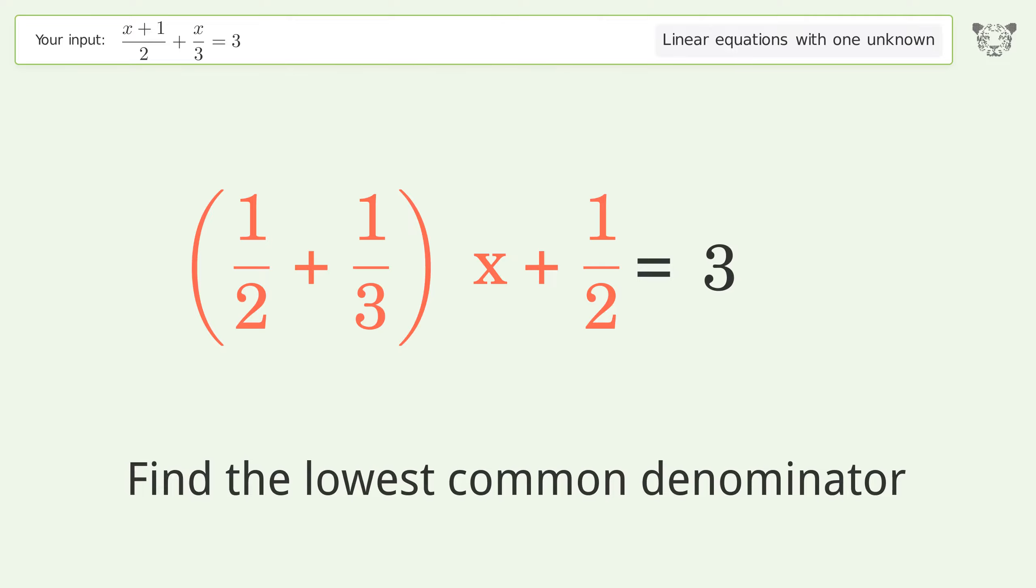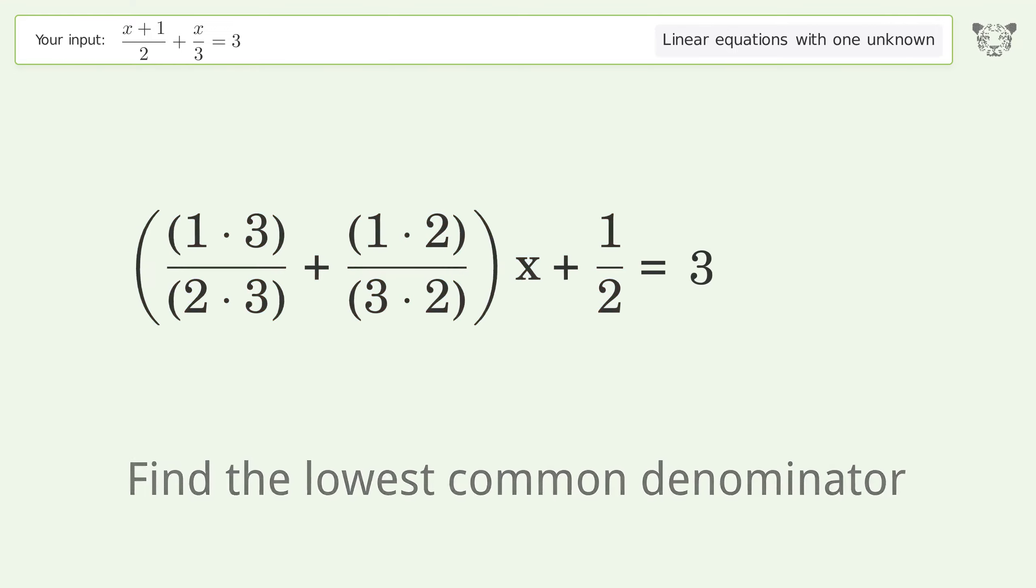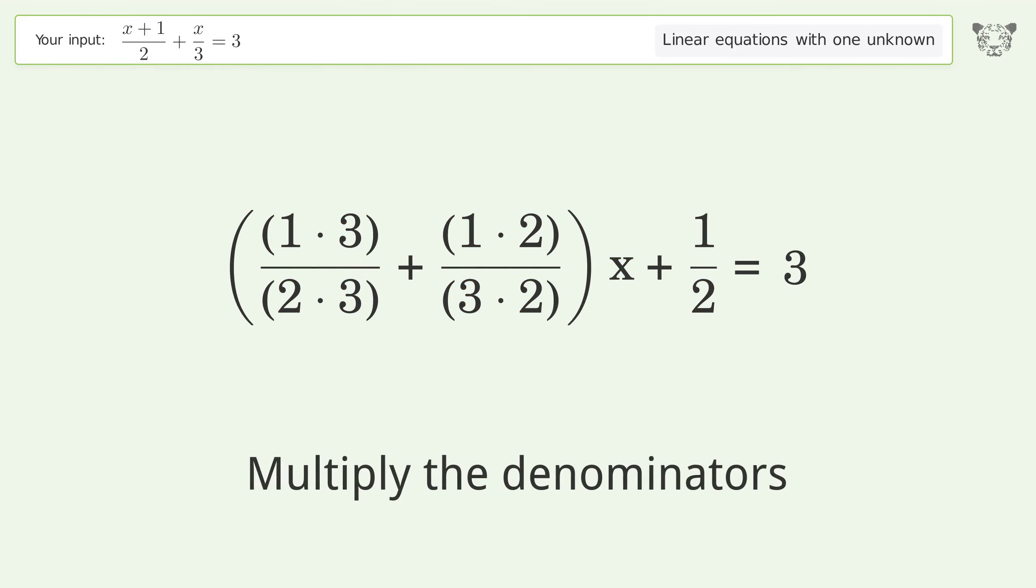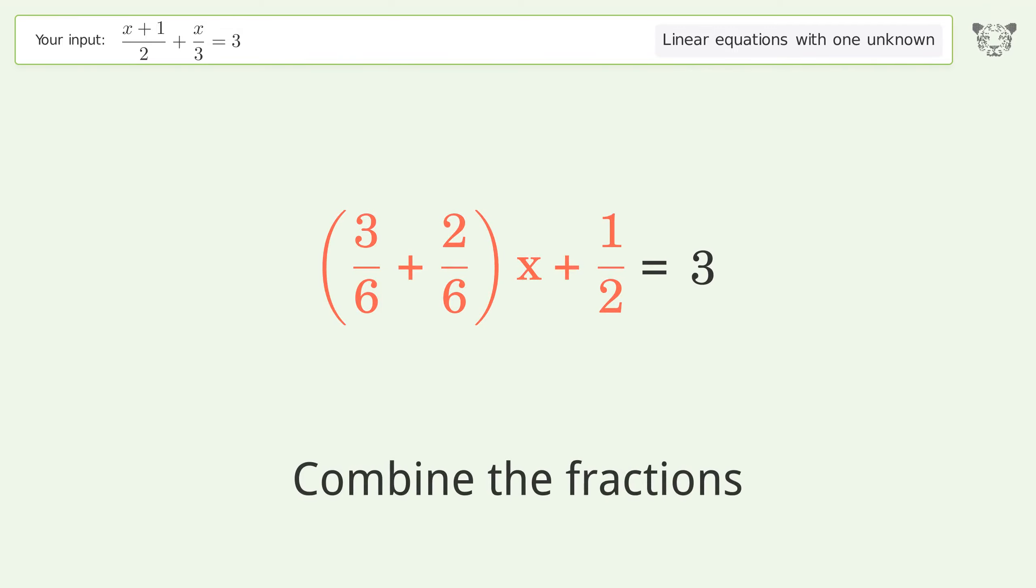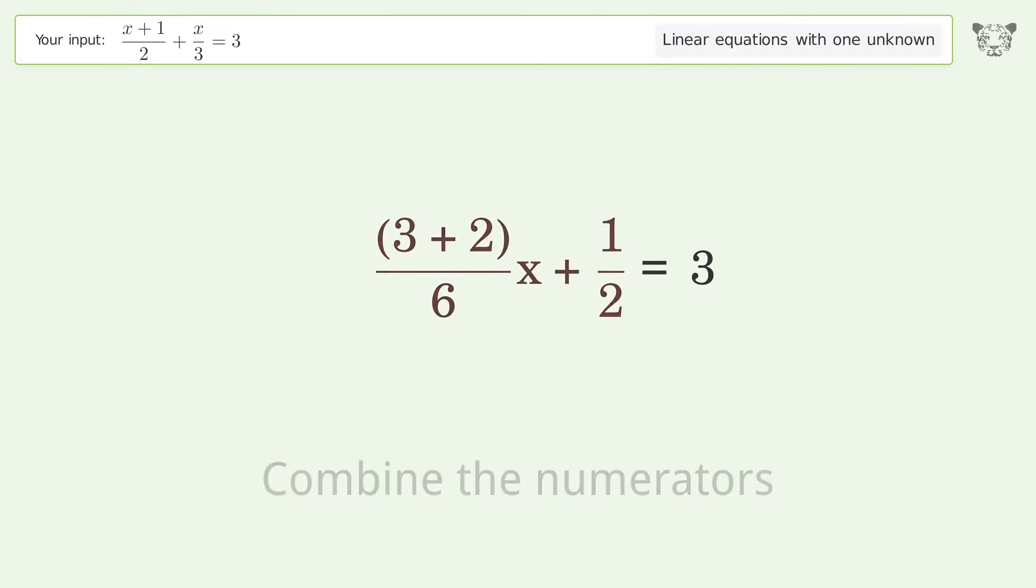Find the lowest common denominator. Multiply the denominators, then multiply the numerators. Combine the fractions, then combine the numerators.